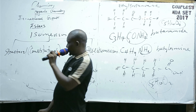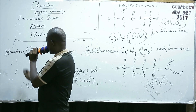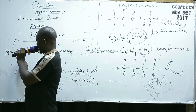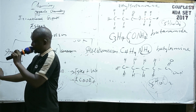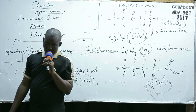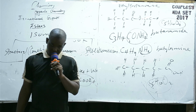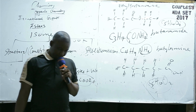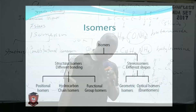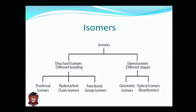Structural isomerism is further classified. On the screen you can see three types, but I'm going to add three more to make it six.